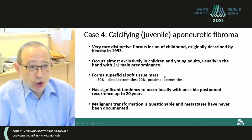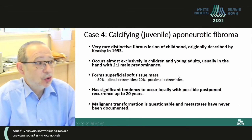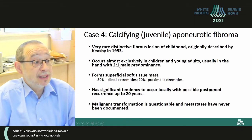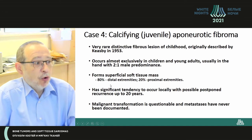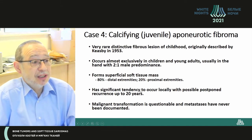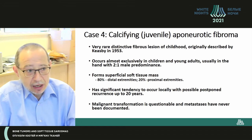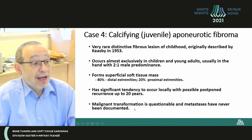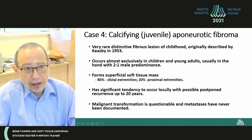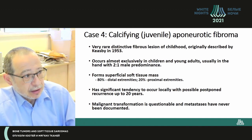It is a very rare and very distinctive fibrous lesion of young age, originally described by Keasby in 1953. There is a two-to-one male predominance, occurring mainly in children and young adults. 80% involve distal extremities and 20% proximal extremities — everything fits the diagnosis. There is a trend to local recurrence in the period of up to 20 years. Malignant transformation has not been proven, and metastases have never been documented. This is our diagnosis.